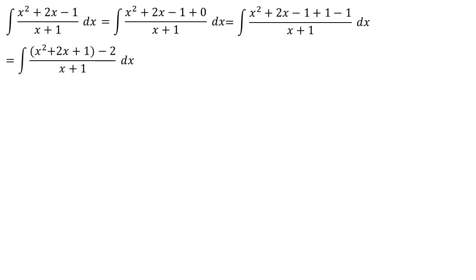We will modify this equation so that we have the integral of x squared plus 2x plus 1 minus 2 over x plus 1 dx. We can rewrite this as the integral of x plus 1 close bracket to the power of 2 minus 2 over x plus 1 dx.